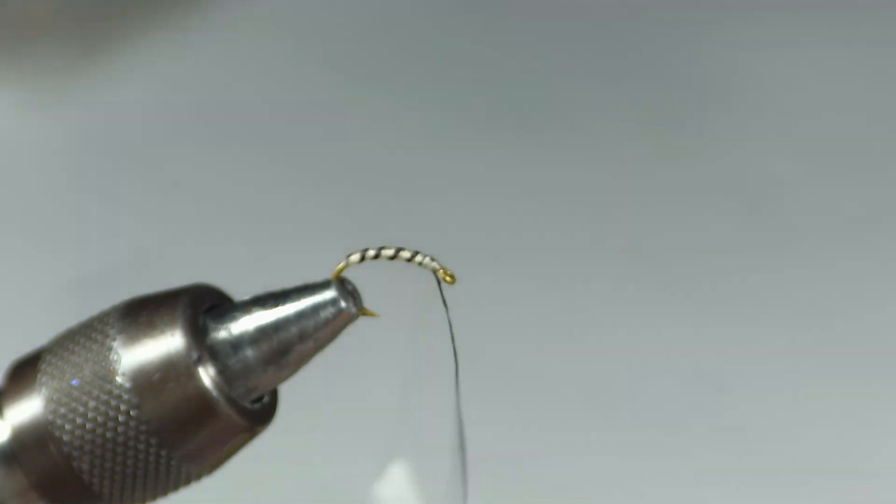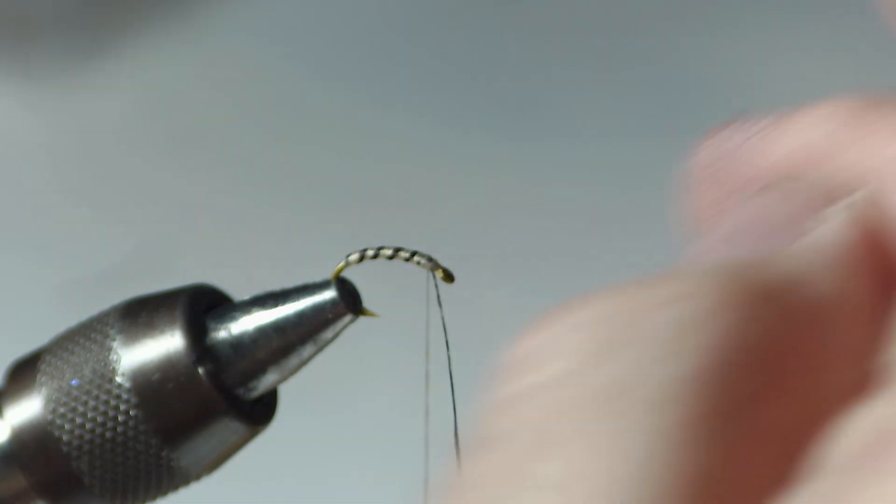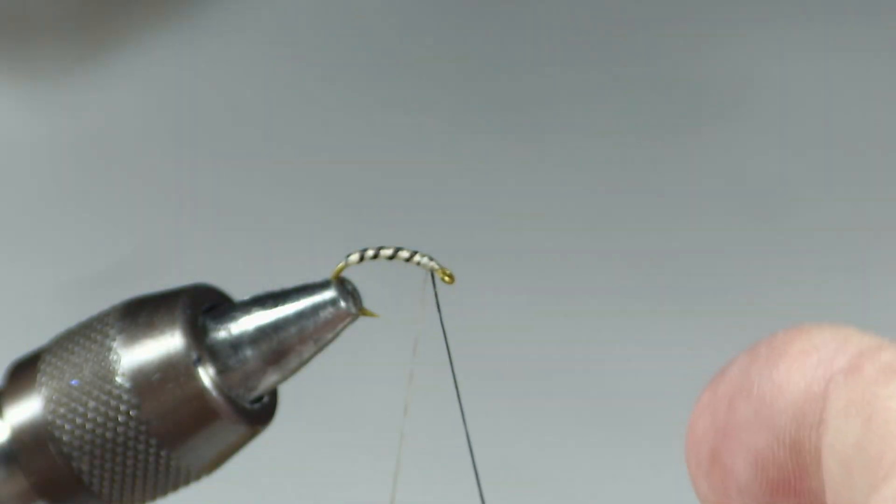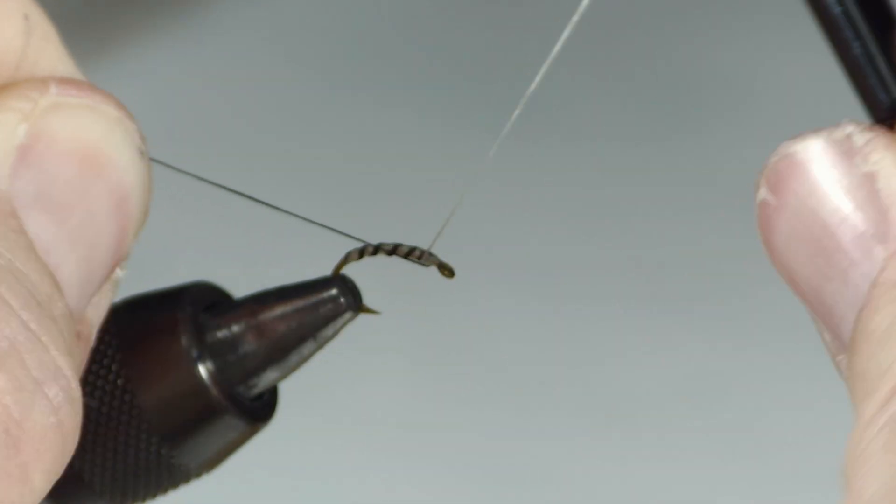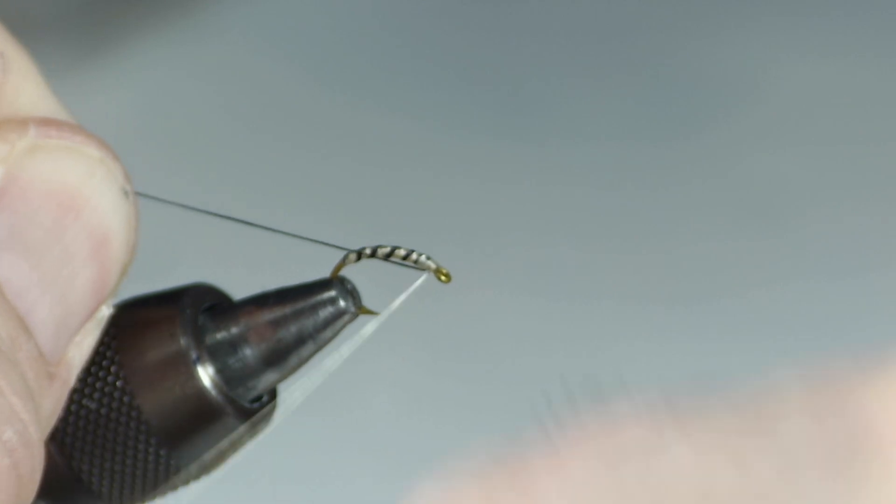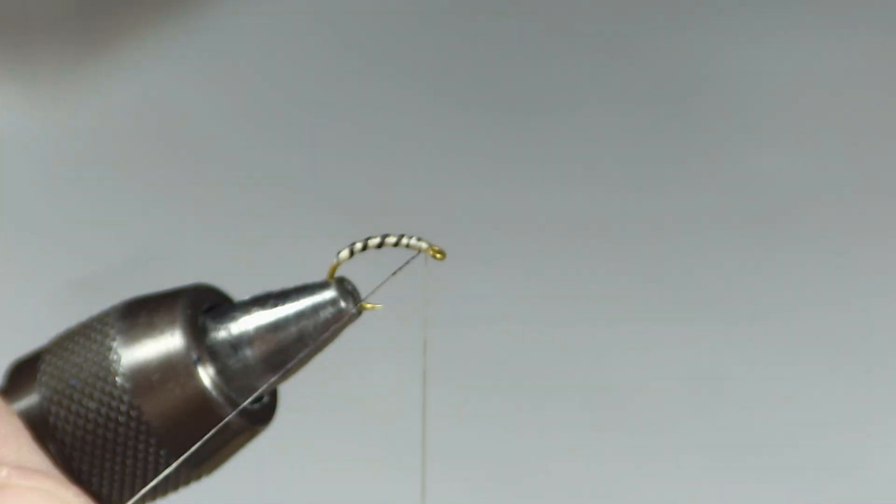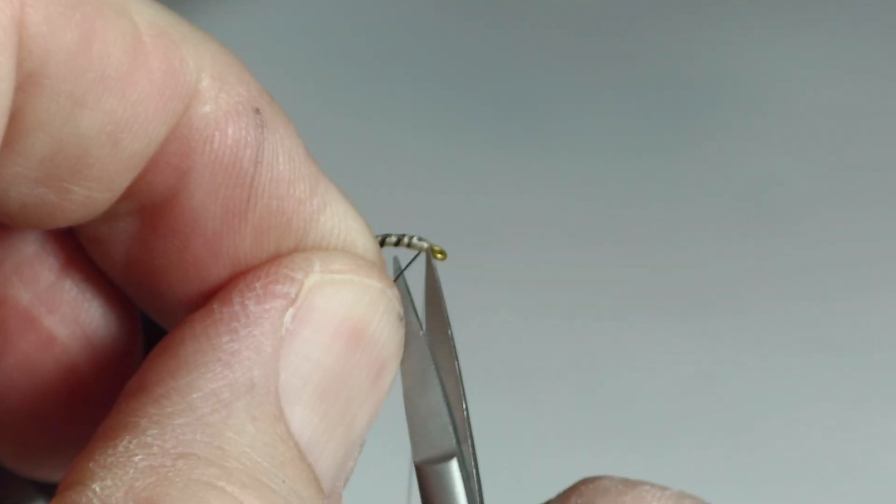Then I'm going to take some wraps over the thread at the front behind the piece of thread to hold it down. Once I've put the thread wraps behind, I'm going to pull it back and take some wraps in front to lock the thread down. Then I'm going to clip this off.